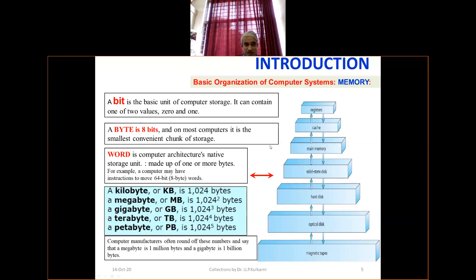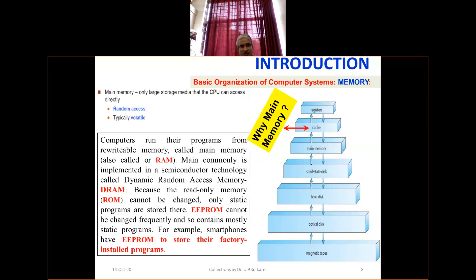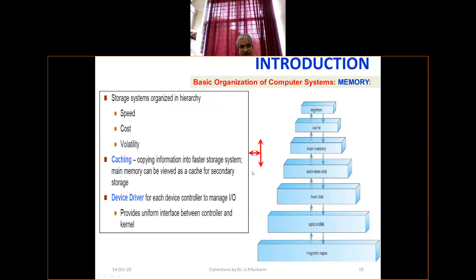We also covered bit, byte, and word. A word is a computer architecture's native storage unit, made up of one or more bytes. For example, a computer may have an instruction to move a 64-bit word, which is an 8-byte word. We introduced terms like kilobyte, megabyte, gigabyte, terabyte, and petabyte. We also covered why cache memory is needed, RAM, DRAM, ROM, EEPROM (electrically erasable programmable ROM), and the storage system from perspectives of speed, cost, and volatility.